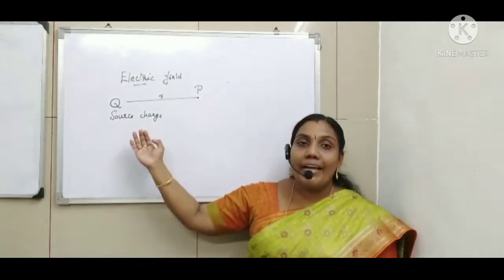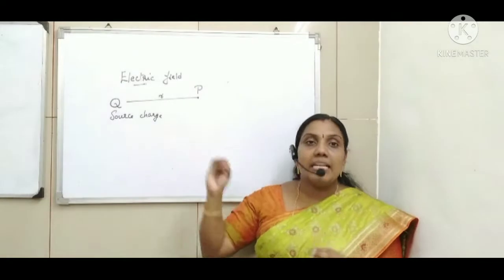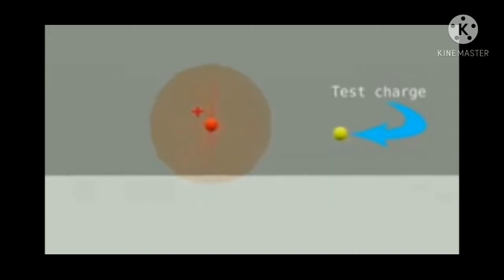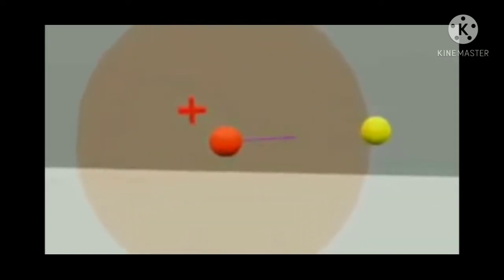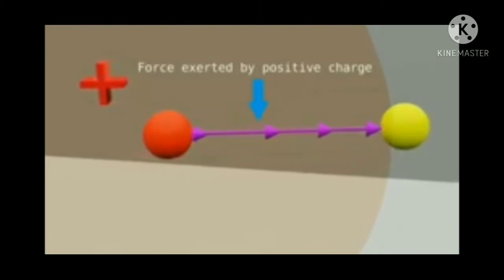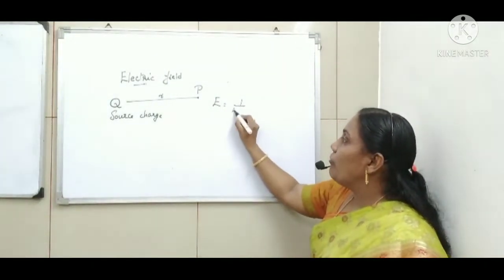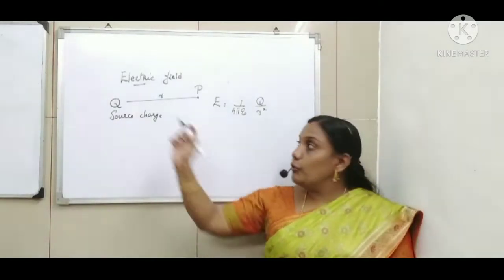Here we consider a source charge. We have to find the electric field of the source charge, and P is a point at a distance R from the source charge. So at point P there is an electric field. Consider a positive charge — around that positive charge there is an electric field. The strength of the electric field at point P is given by the formula E = 1/(4πε₀) × Q/R².